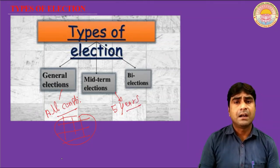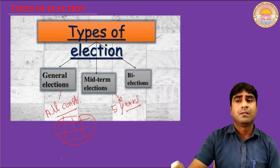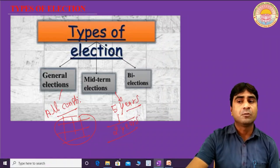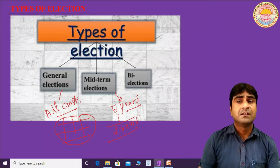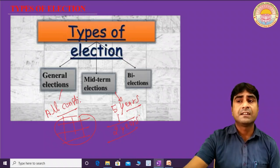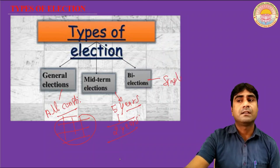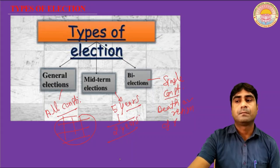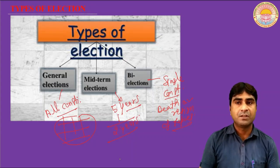If the government is dismissed due to any reasons and the election is held before completing the five-year term, this is known as the mid-term election. The third type is the by-election. If in any constituency a representative dies or resigns, an election is held in that particular or single constituency. This is known as the by-election — held in a single constituency due to the death or resignation of a representative.